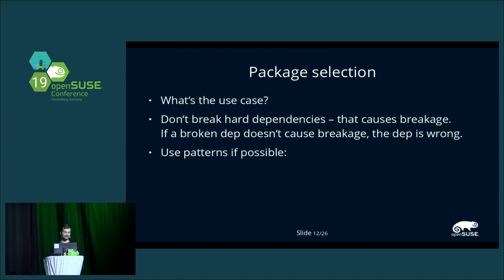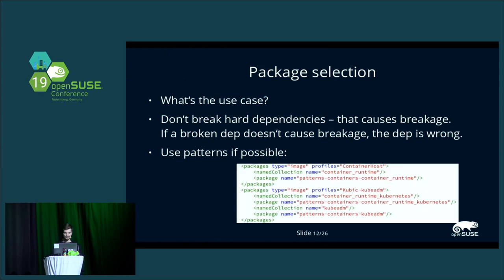What makes this easier is if you use patterns, which you've probably heard about in the previous talk about DNF. Then it looks like this instead of a 200-line list of packages — you just say I want this pattern in this profile and the other pattern in the other profile, rather than listing 200 packages per Kiwi file, which is just unmaintainable. It also makes it easier to have a synchronized package selection between the DVD installation and the Kiwi image files. You can just edit a pattern spec file, say I want package A in all MicroOS images, and it automatically rebuilds the image with those packages.